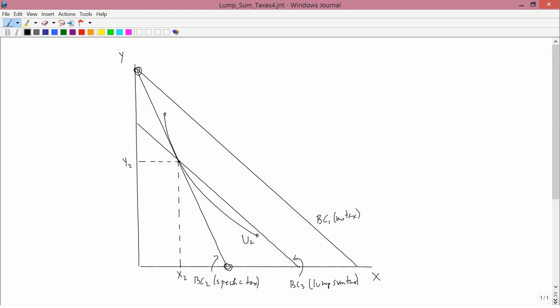So now we can ask the question: the government doesn't care which of these two it imposes because the revenue is exactly the same. Well, does anybody else care? And the answer is yes. And you can see now with this diagram why that's the case. If you were this consumer and you were given a choice between BC2 and BC3, which would you pick? Well, the point is that if you face BC3, you could achieve this utility level.